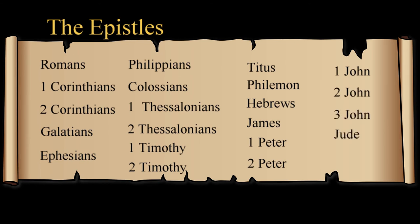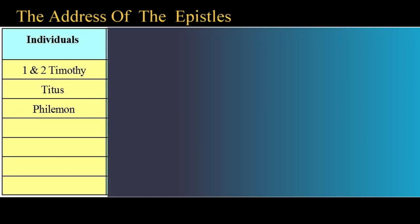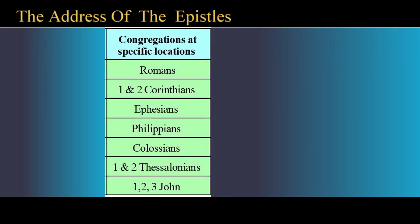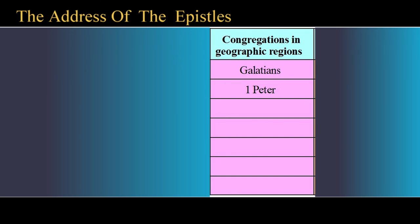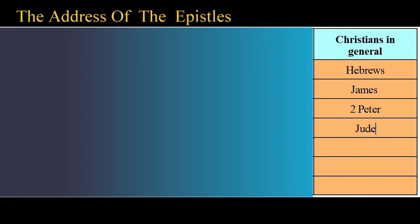Now let's identify the principal address of the epistles. They're addressed to individuals: 1 and 2 Timothy, Titus, and Philemon. Congregations in specific locations: Romans, 1 and 2 Corinthians, Ephesians, Philippians, Colossians, 1 and 2 Thessalonians, and 1, 2, and 3 John, although this address has to be determined more indirectly in these books. Congregations in geographic regions: Galatians and 1 Peter. And to Christians in general: Hebrews, James, 2 Peter, and Jude.